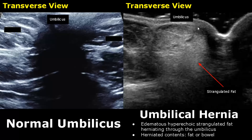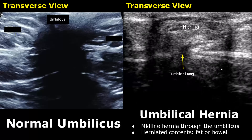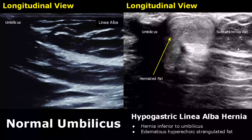In this umbilical hernia, we see edematous hyperechoic strangulated fat herniating through the umbilicus. Strangulated hernia contents such as fat usually appear hyperechoic. Here is another image of an umbilical hernia — this is the location of the umbilical ring, and we can see the herniated contents over here. Here is a longitudinal image of the umbilicus.